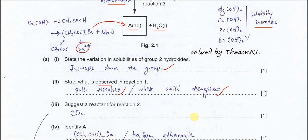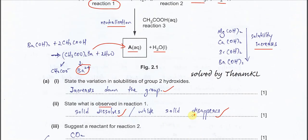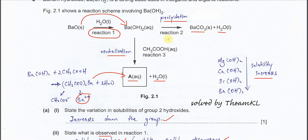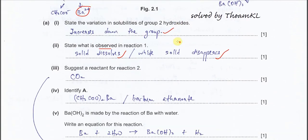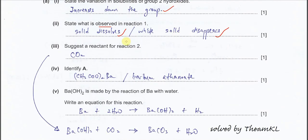Part 3: suggest a reactant for Reaction 2. Reaction 2 is the precipitation — from the barium hydroxide aqueous solution, barium carbonate forms as a precipitate. The observation is that a white precipitate is formed. The answer is CO₂.